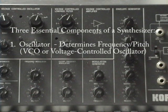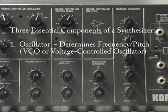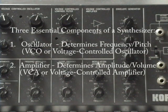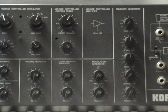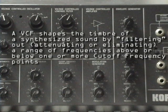Number one: the oscillator — on analog synthesizers these are generally referred to as voltage controlled oscillators or VCOs. The oscillator determines the pitch of the note by determining its frequency. Number two: the amplifier, or voltage controlled amplifier, which controls the amplitude or volume of the note. And number three: the filter — the voltage controlled filter or VCF — which is really what determines the timbre of a sound. The VCF controls timbre by filtering out certain harmonics above or below a certain cutoff point.